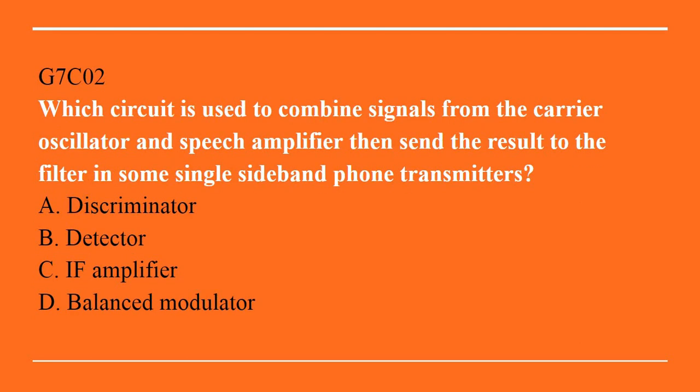G7C02: Which circuit is used to combine signals from the carrier oscillator and speech amplifier, then send the result to the filter in some single sideband phone transmitter? A. Discriminator. B. Detector. C. IF amplifier. D. Balanced modulator. Answer is D. Balanced modulator.